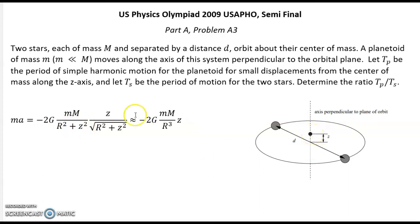And multiplied by sine of this small angle between direction to planetoid and direction to star, which is z over square root from r squared plus z squared.